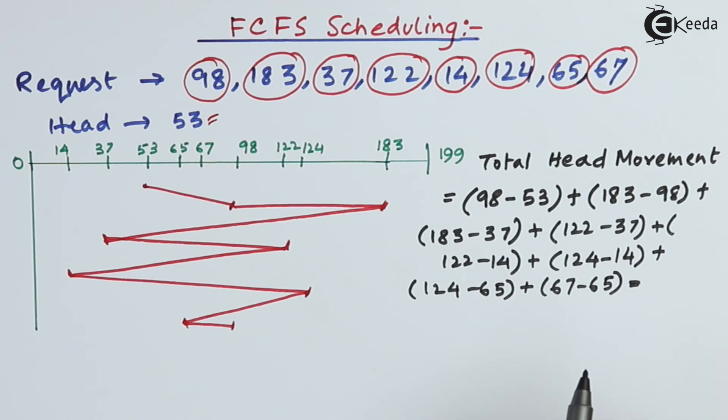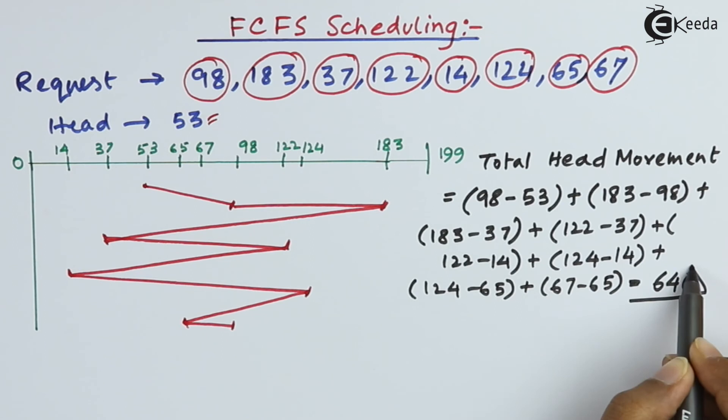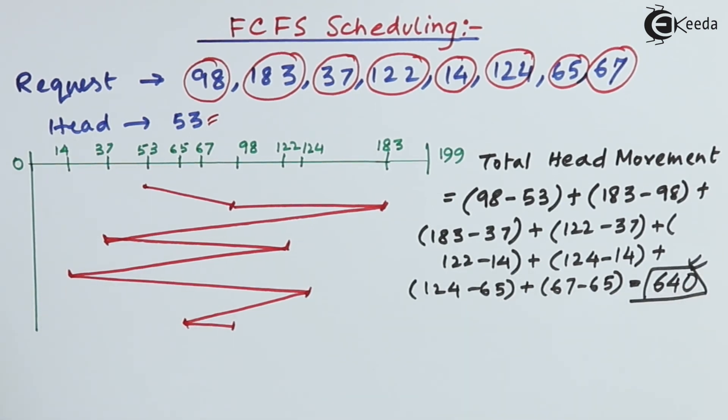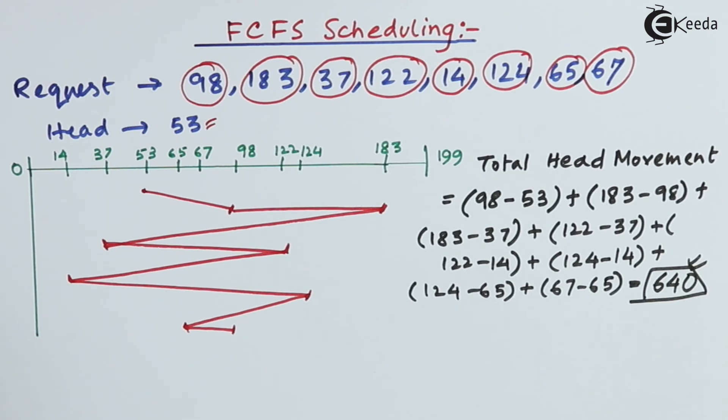So the total head count will be 640. As we can see, there is an exceedingly high number of head counts or total head movements involved in FCFS. That is why we generally avoid this type of algorithm.